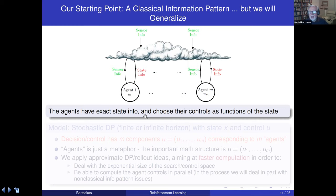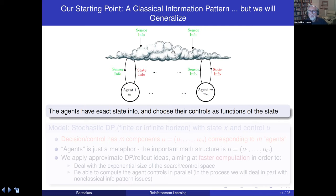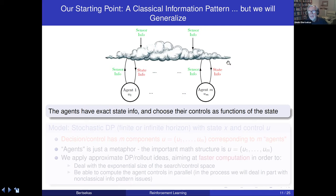Under the classical information pattern, agents have exact state information, share all necessary information, and choose controls as functions of the state. Conceptually, this can be viewed as an information-collecting cloud or clearing house that collects information from agents and sensors, condenses it into state information, and passes it to the agents. The exact state value is given by the cloud. This is an idealization but a good starting point for understanding the classical information pattern.